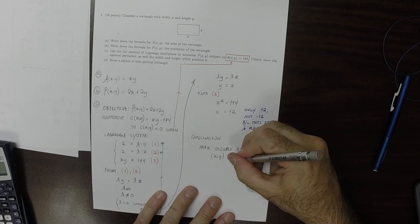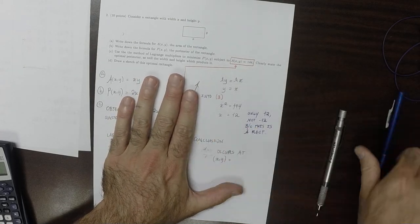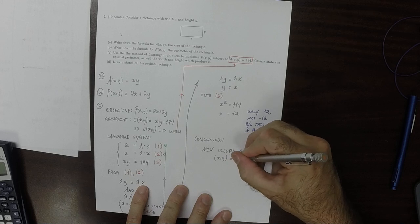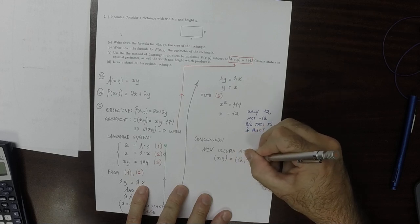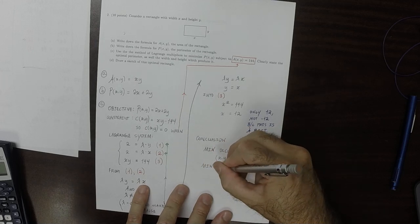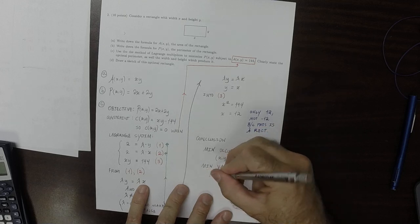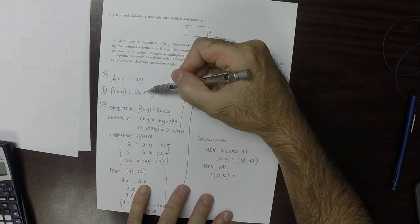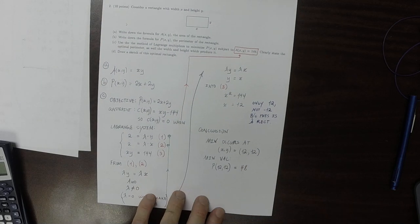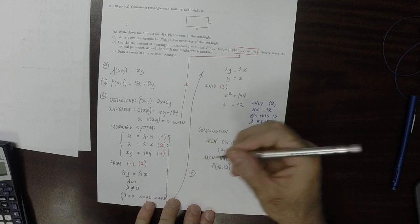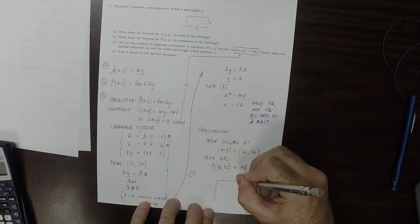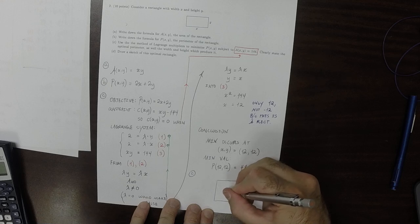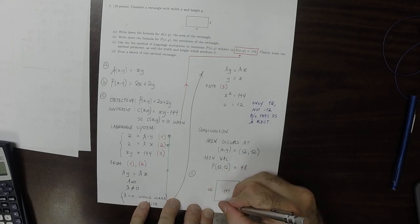No, the minimum. The minimum perimeter occurs at x,y is (12,12). And the minimum value is perimeter evaluated at (12,12), which would be 24 plus 24 is 48. And then part c, the sketch, is that yes, obviously this is a square. So the area is 144 and the dimensions are 12 and 12.